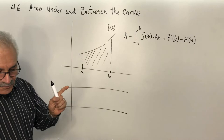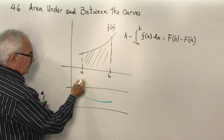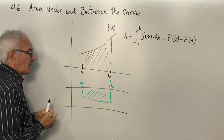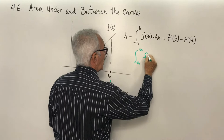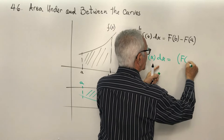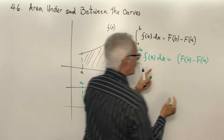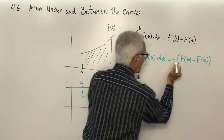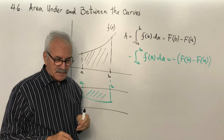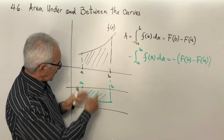If the function is under the x-axis, the area is also the integral from A to B of f(x) dx, equal to F(B) minus F(A). But in this case the result is negative. Negative area does not actually exist — the minus indicates that the area goes under the x-axis. The physical meaning is simply that it falls below the x-axis.